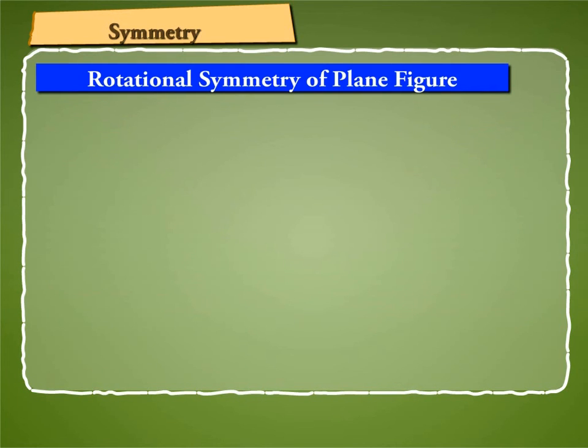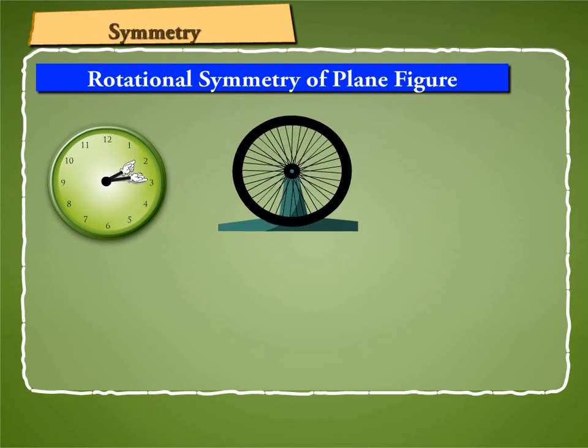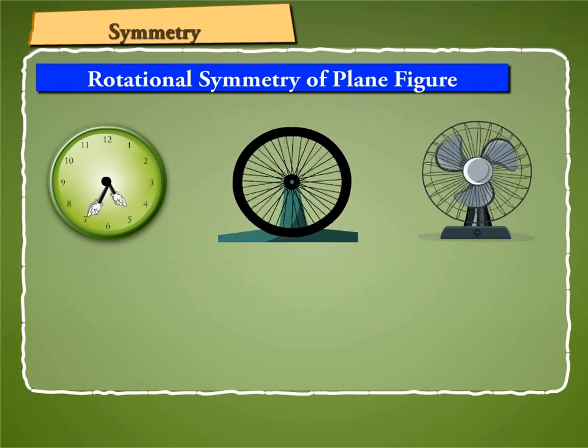In our daily life, we observe many objects which rotate. For example, hands of a clock, a wheel of a motorcycle, a ceiling fan, etc.